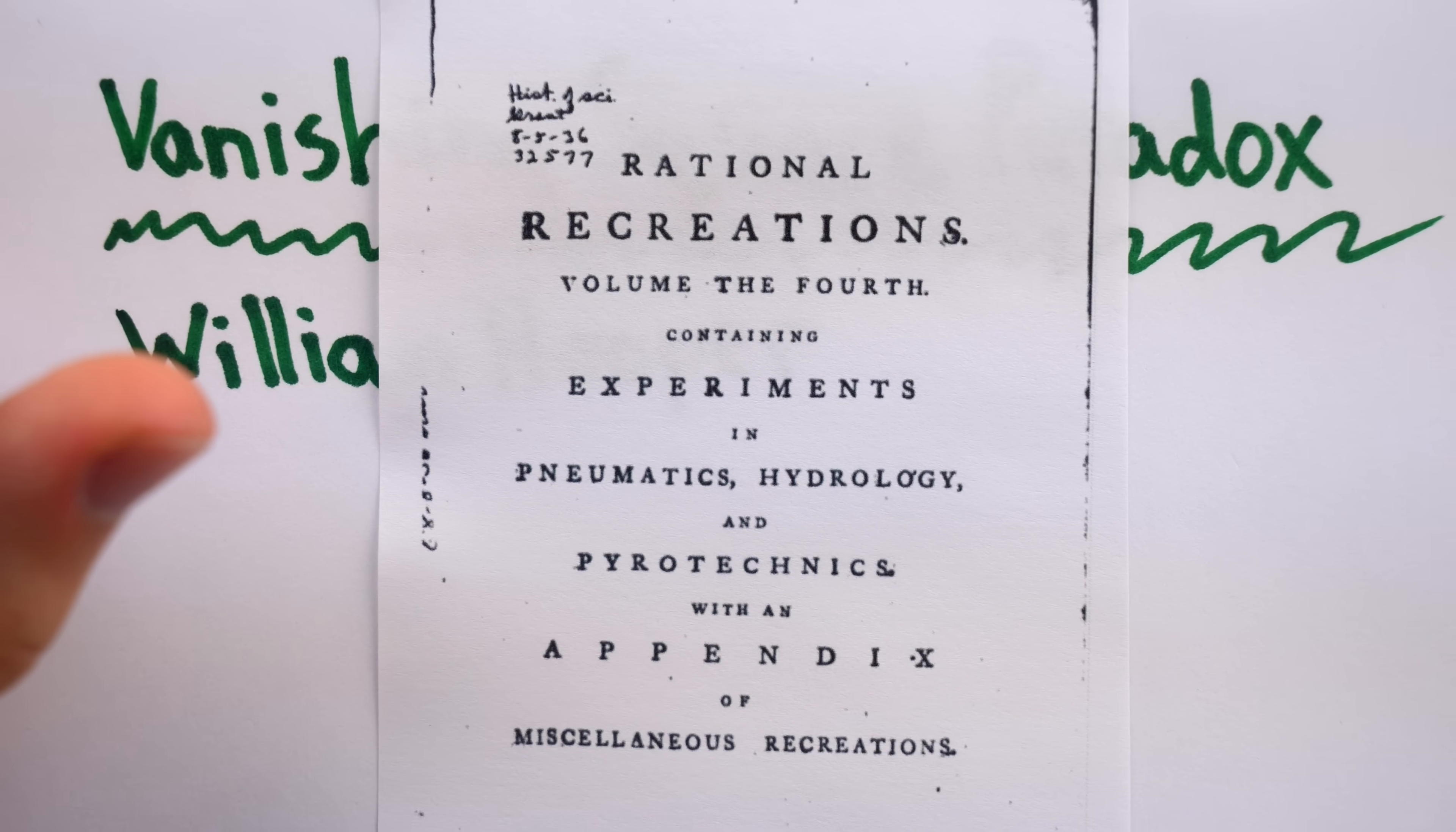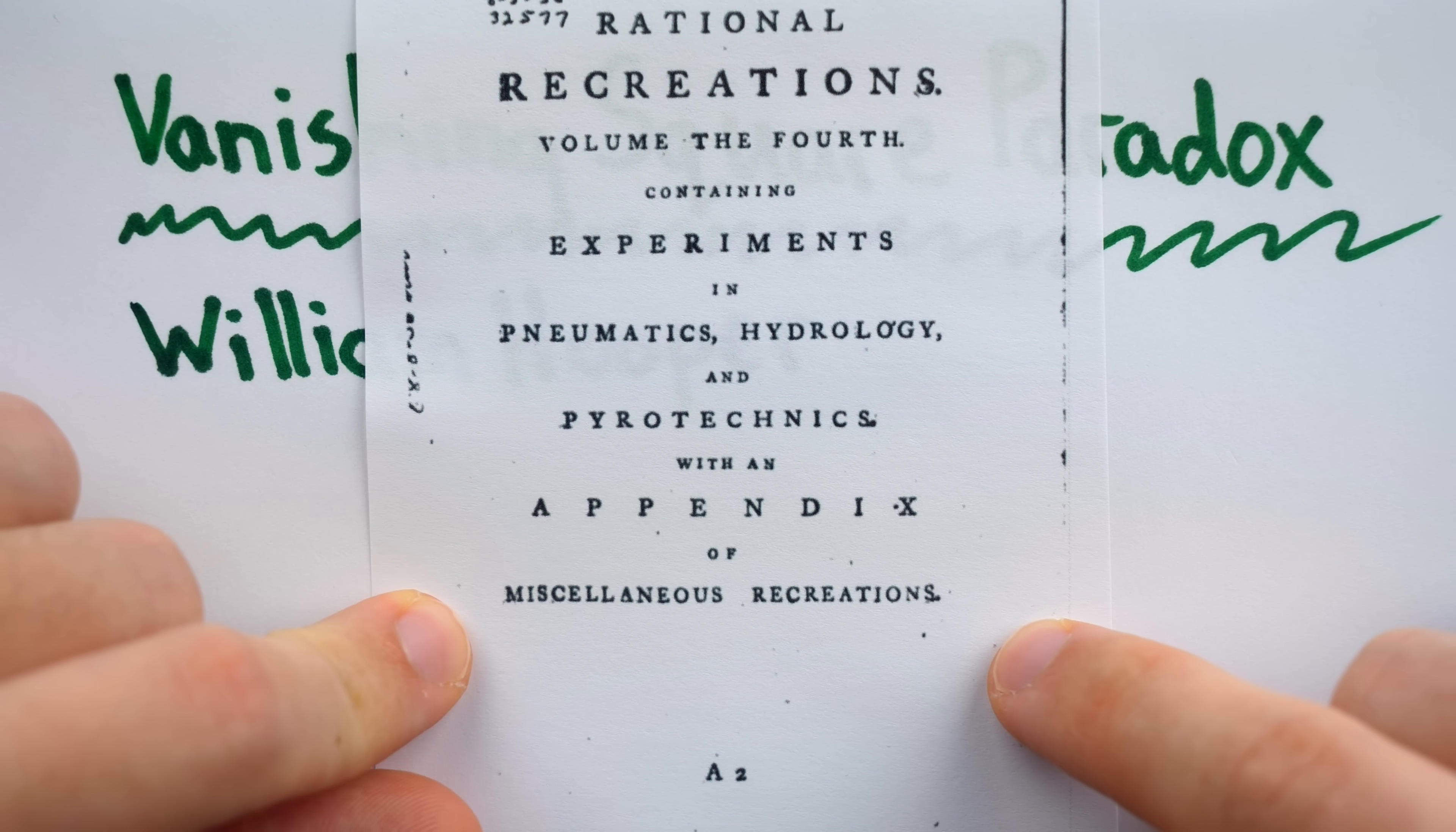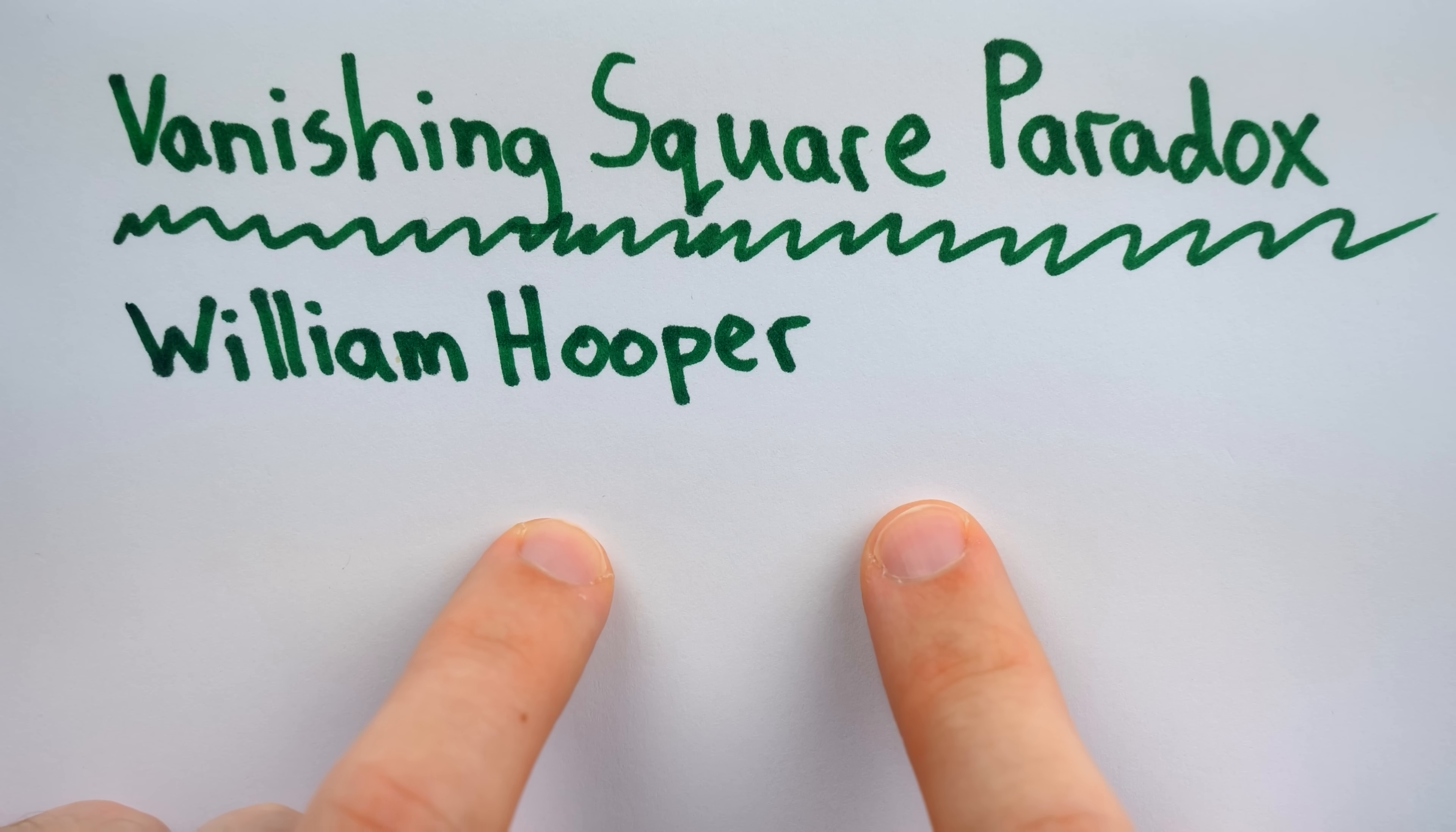His book contains recreations of all sorts for all audiences, and includes a cute appendix, which I suspect is where this puzzle showed up. The appendix contains miscellaneous recreations. The whole book included things like how to create the sound of thunder, and how to make fireworks, and how to materialize a square, which is the coolest part that we're talking about now.